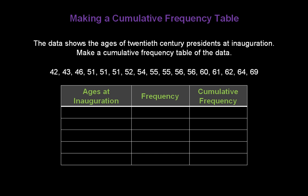Now, let's start filling in the intervals under ages at inauguration. We're going to have an interval of 6 in the top row, the second row, the third row, the fourth row, and the fifth row. Equal intervals all the way down the chart.